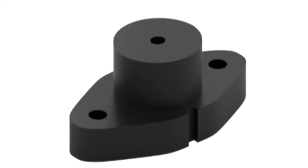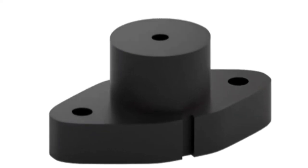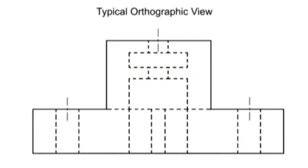Sectional views are very useful when there is geometry on the interior of a part that's difficult to understand from looking at typical orthographic or isometric views. They are also very useful in dimensioning the drawing. Sectional views allow us to dimension the interior of a part without dimensioning to hidden lines, which is considered a poor convention.